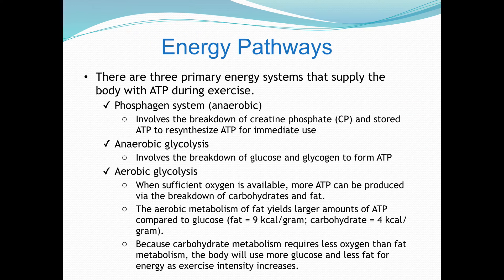The phosphogen system is a breakdown of creatine phosphate and stored ATP — it's immediate. Anaerobic glycolysis is a breakdown of glucose and glycogen to form ATP. And aerobic glycolysis uses oxygen. One gram of fat produces about nine calories of energy, while one gram of carbohydrate produces about four calories — this ties into the amount of ATP that fat and glycogen produce within the body. If we have a low-fat diet, we're not getting enough energy for lower-intensity activities, and it changes our blood chemistry and how our body metabolizes energy.